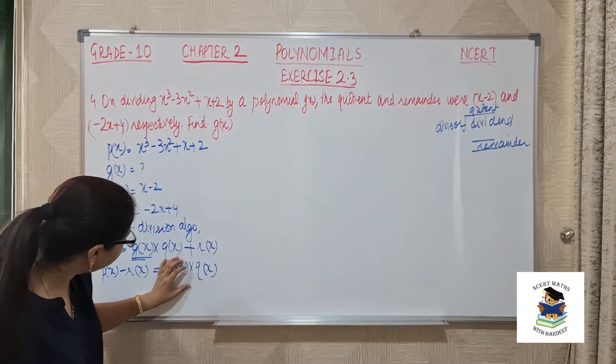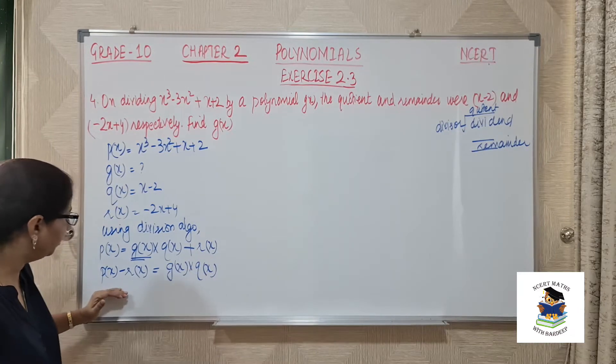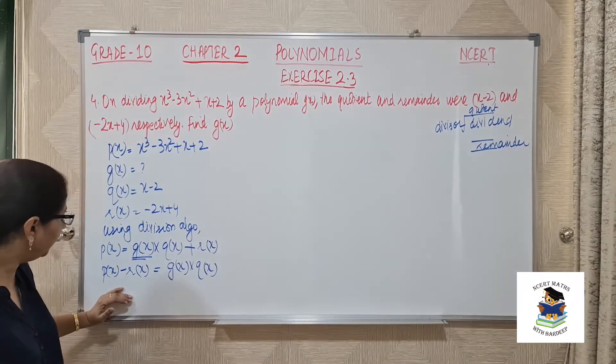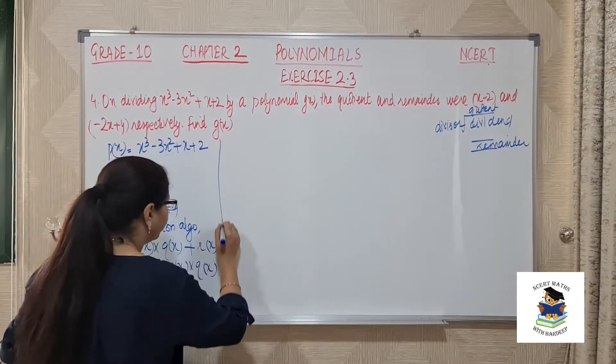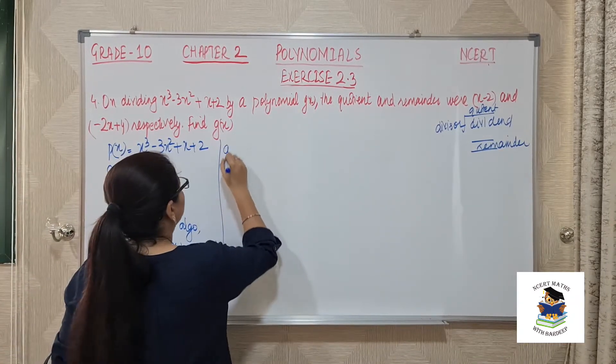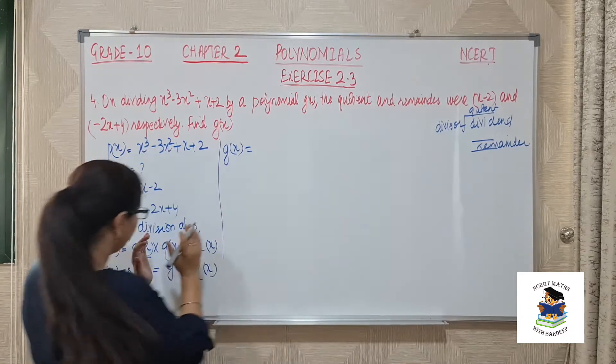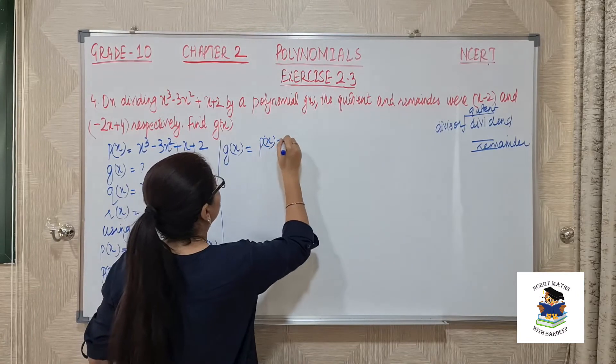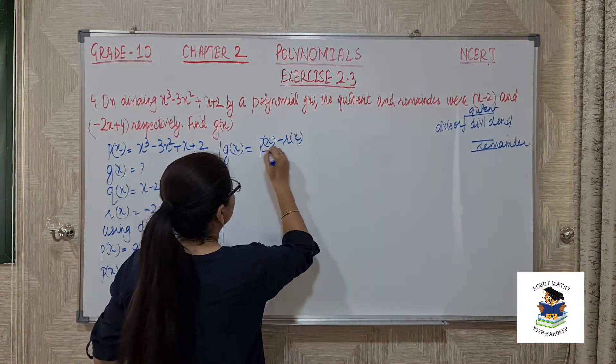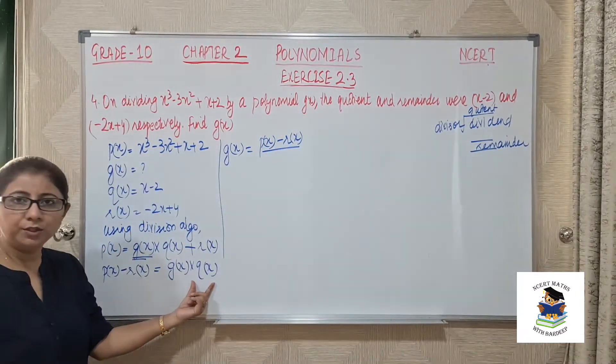Now we need to find gx. So we will shift this qx to the denominator of the left end side. We will say, and I am switching the terms also, gx is equal to px minus rx over qx.